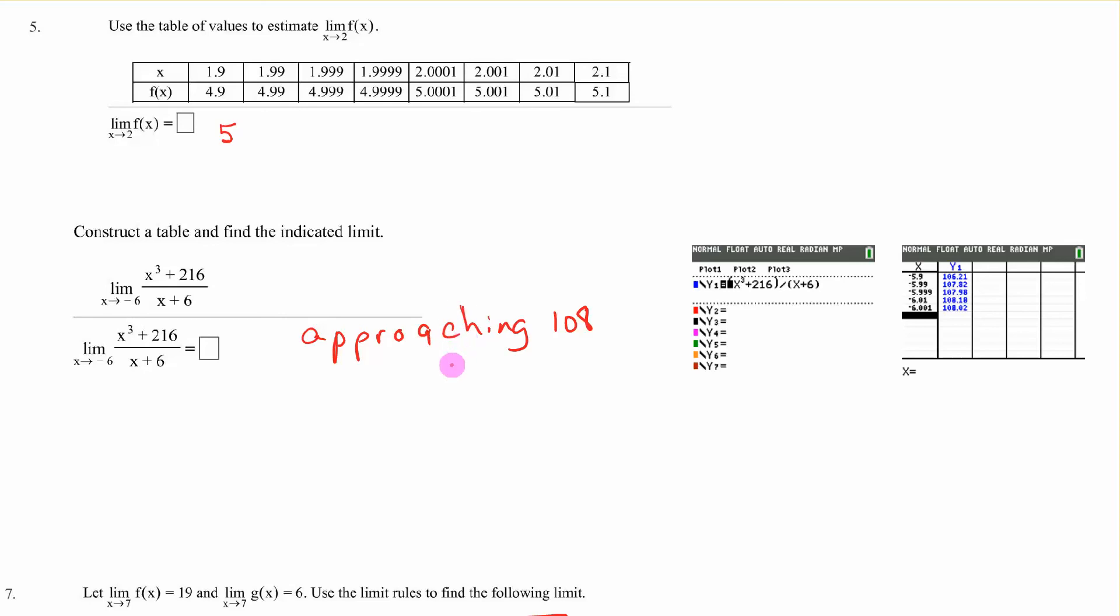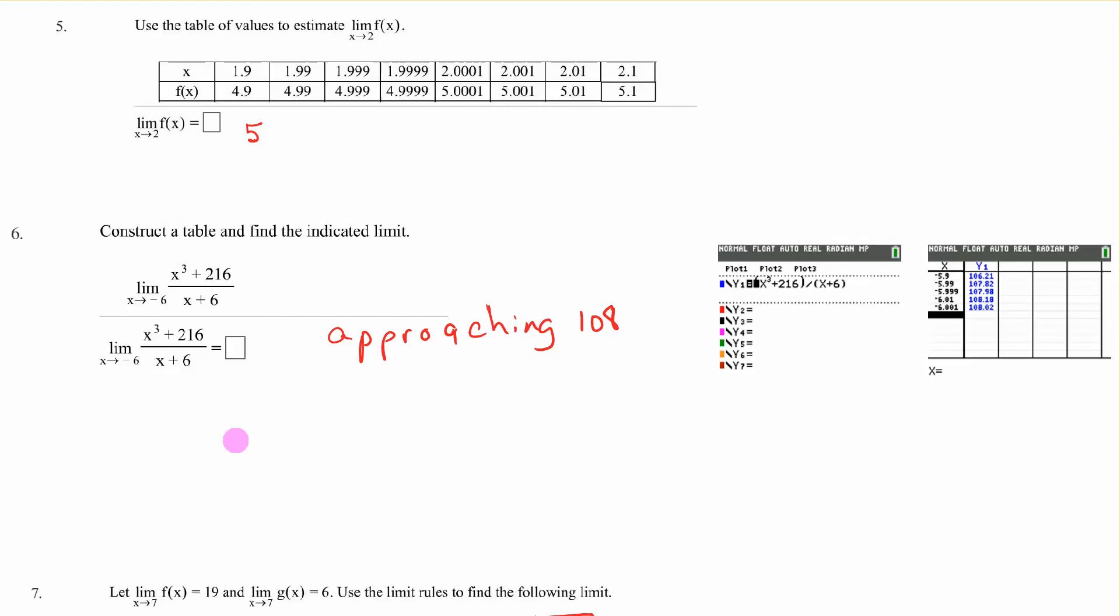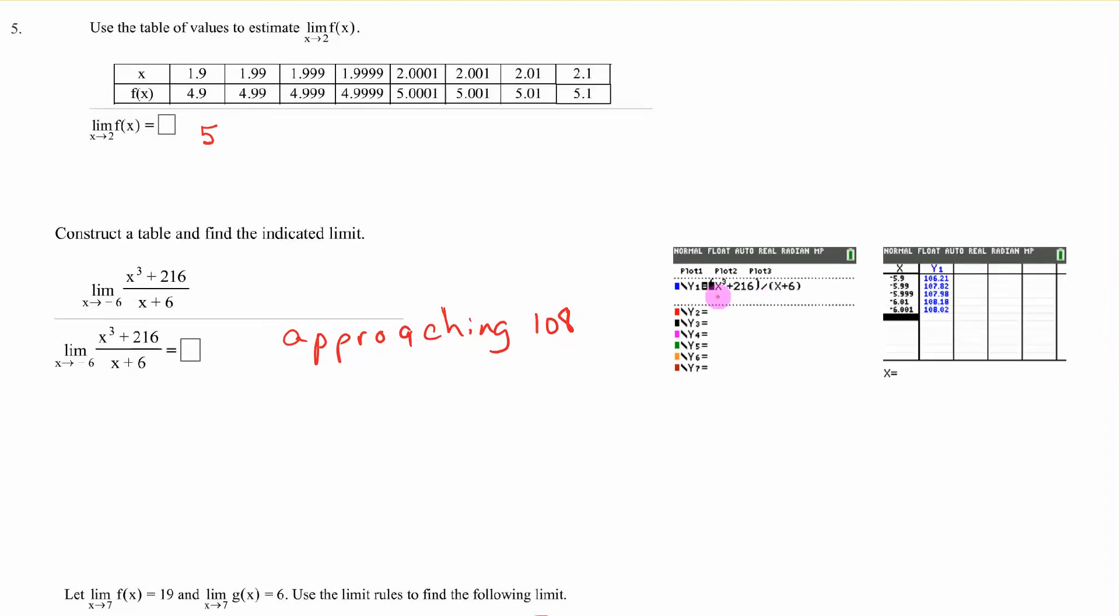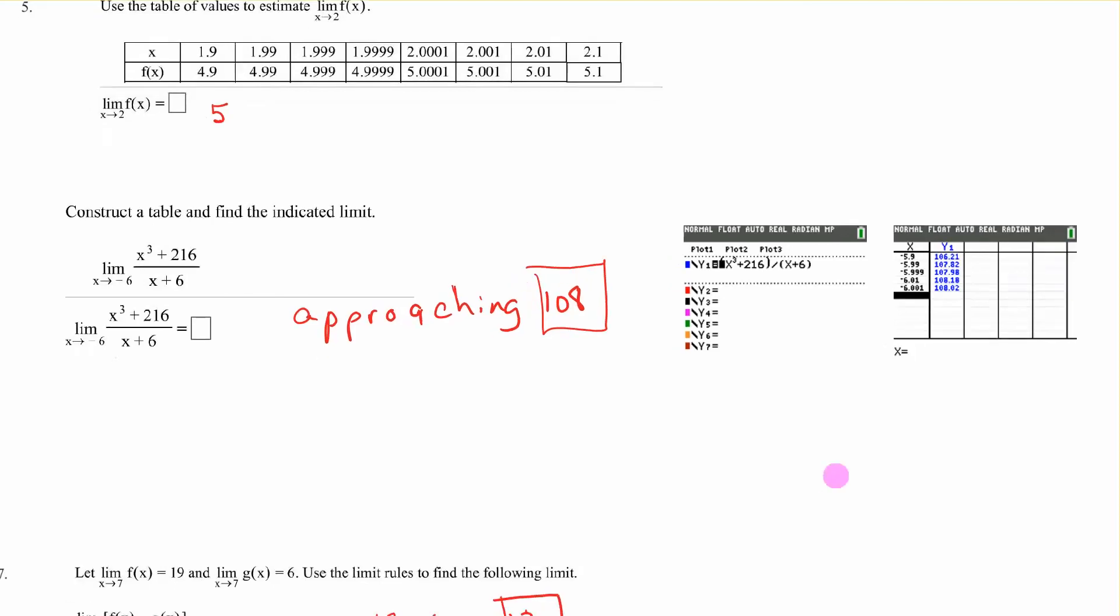All right. So we've got this one. It says construct a table and find the indicated limit. If we plugged in negative 6, we get 0 here. So we probably need to use the calculator to do this. So I put that in y1. And I went to my table. And I'm going to approach negative 6 from the left and the right. So I did negative 5.9, negative 5.99, etc. And then 6.01, 6.001. And what does it look like I'm getting to? I'm approaching 108. So that would be my answer. So put it in the calculator. Come at it from the left and from the right and see what y value you seem to be approaching.